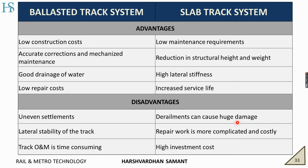Derailments can cause huge damage on slab track. The repair work is more complicated and costly — if there is any minor repair needed in the slab, the entire length of the slab should be replaced. That means first breaking the concrete, then removing it, and then placing fresh concrete. Doing this for even a small section proves to be a costly effort. Investment cost is also higher.